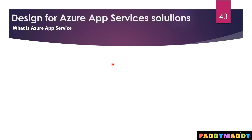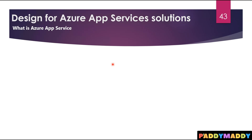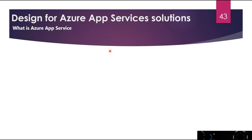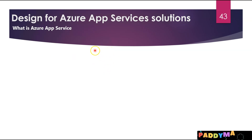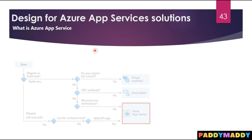You have to choose something called an App Service Plan, which we will talk about in this lecture. App Service enables automated deployment from GitHub, Azure DevOps, or any Git repository.